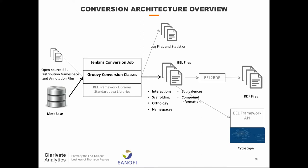We used Jenkins to schedule this, going back to the whole pipeline concept. It's basically fully automated — I just send a note to my team, go into Jenkins, push a button, and everything starts converting with automated tests. It generates BEL files plus additional information such as compound structures. Then it can go through the BEL Framework API into things like Cytoscape. BEL-to-RDF conversion is also part of the pipeline. We also generate quite extensive log files and statistics, which is actually useful because it helps us diagnose gaps in our own data — for example, if an interaction conversion failed because an entity didn't have enough public identifiers.